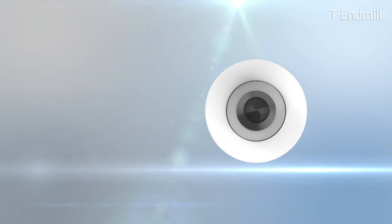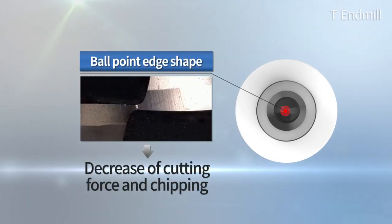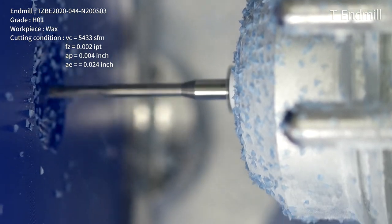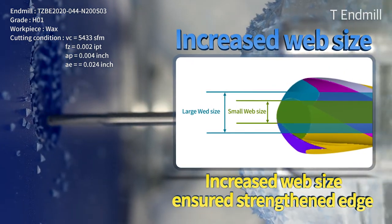T and Mill series also improved its tool life and workpiece's surface roughness with two factors. Lessens cutting load with the implementation of a special ballpoint design and empowered its hardness with increase of web size.